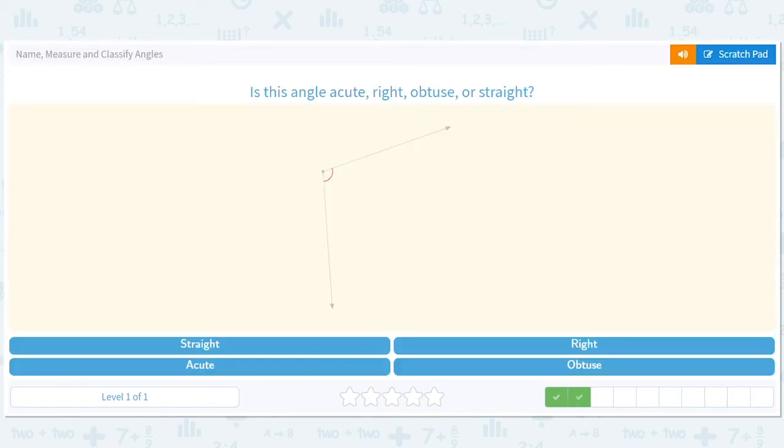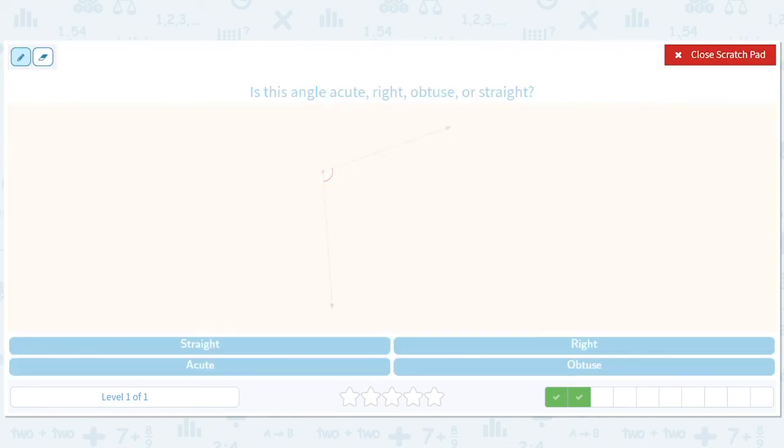Is this angle right, acute, obtuse, or straight? So right angle would be like this. This is bigger than a right angle. It's bigger than 90 degrees. When you think of a right angle, you can think of like the angle between a floor and a wall. So this would be bigger than that. So it's obtuse.